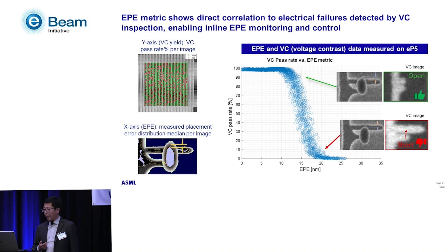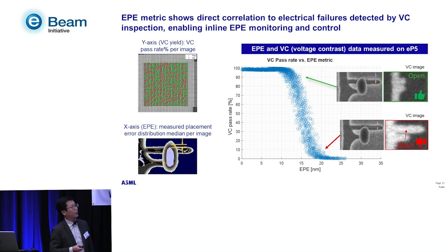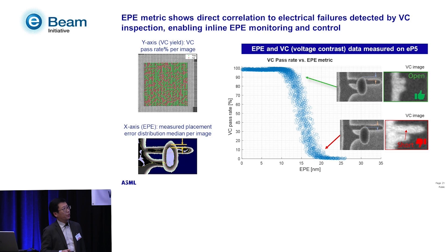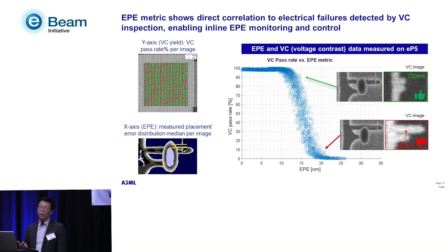This example from IMEC shows that the EPE metric is a very good indicator of what we call voltage contrast yield. On the vertical axis is the VC pass rate — measuring all holes within a field of view, green for pass and red for fail. On the horizontal axis is the relative EPE between patterns in two layers for a cut pattern. We saw very good correlation between the VC pass rate and the EPE metric, meaning we can use inline EPE monitoring as an early indicator or predictor of potential yield issues downstream in the process.